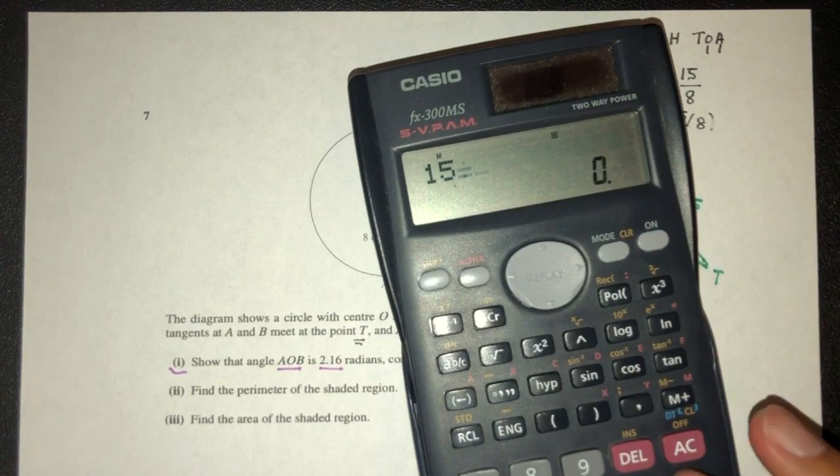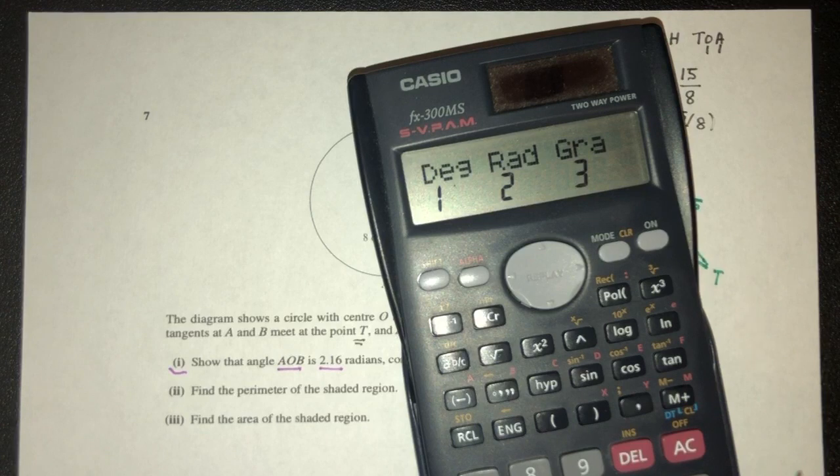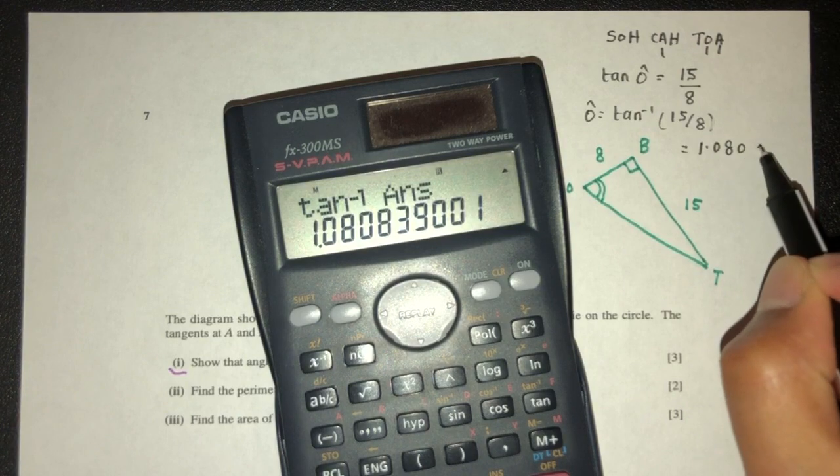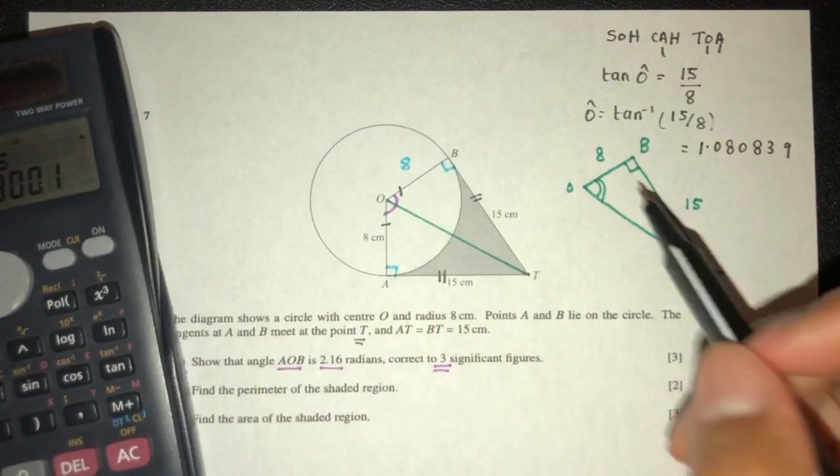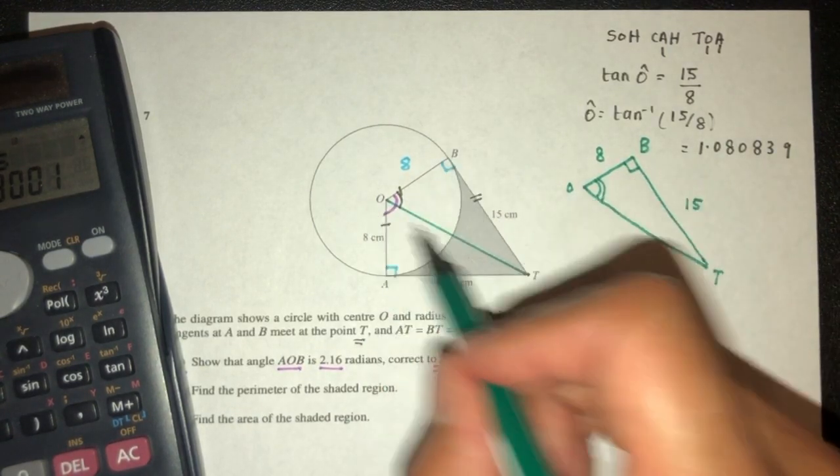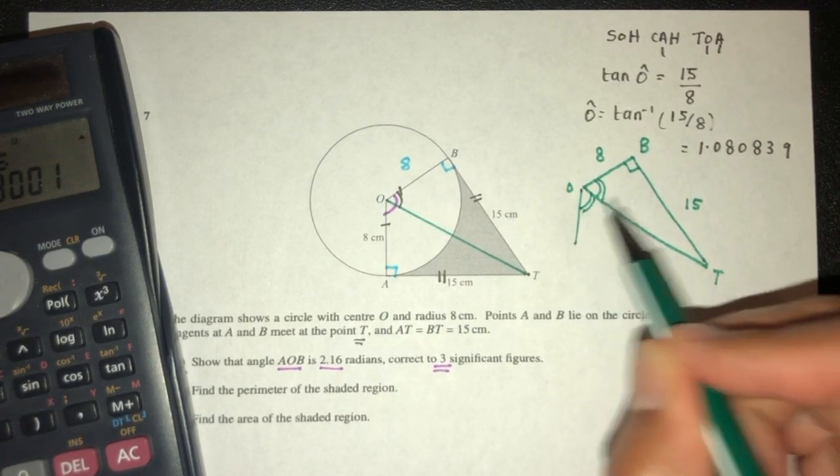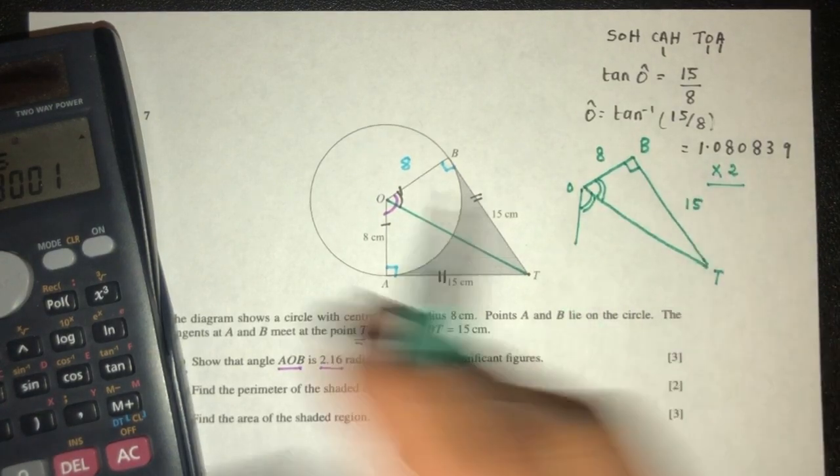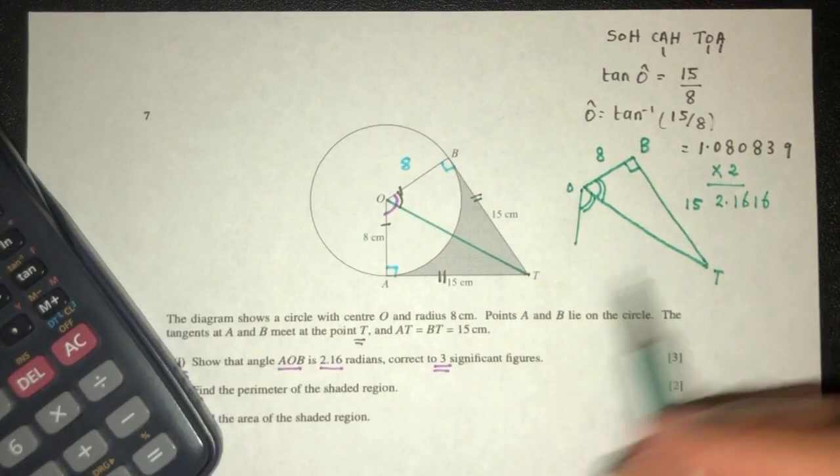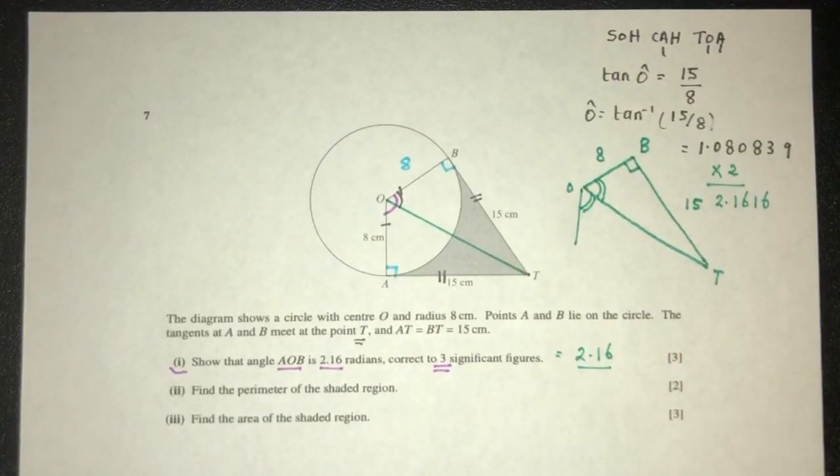So let's find out. Tan inverse of that. We have to find, obviously, in radians, that will be 1.080839. Now again, this is this side. This is just the one side. But now we know this top side and the bottom side are the same, so the angle here will be the same thing as well. So multiply by 2. Let's see what we get. Times 2, that will be 2.1616. So correct to 3 significant figures, that should be 2.16 radians, shown as required. That is part 1 of the question.